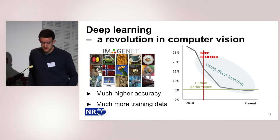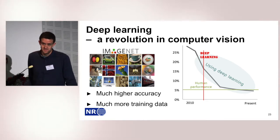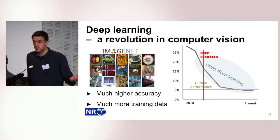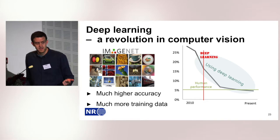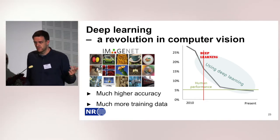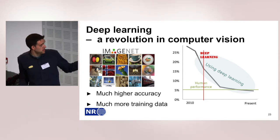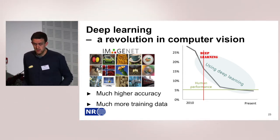The problem with deep neural networks is that they require a lot of training data, and they're easy to overfit. So they're not always better than traditional methods. But if you have a lot of data, then they can certainly do a lot better.